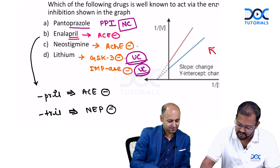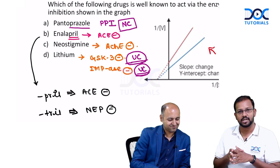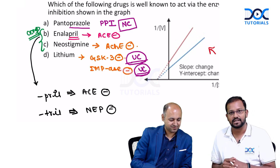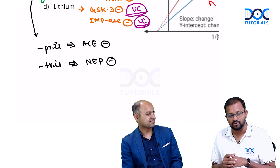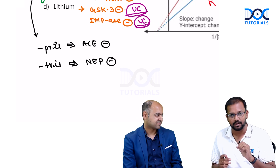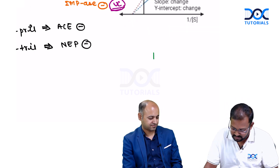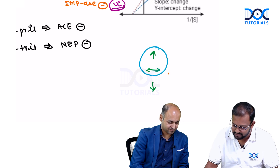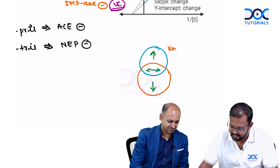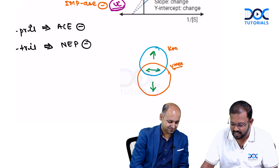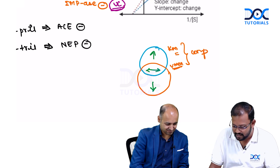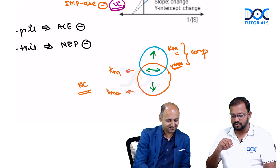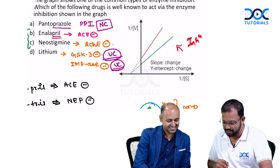Now, regarding options B and C — enalapril and neostigmine — please note that both of these are competitive inhibitors. For competitive inhibitors, Km is increased and Vmax is unchanged. For non-competitive inhibitors, Km is unchanged and Vmax is decreased. A simple way to remember: increased Km with unchanged Vmax = competitive; unchanged Km with decreased Vmax = non-competitive.